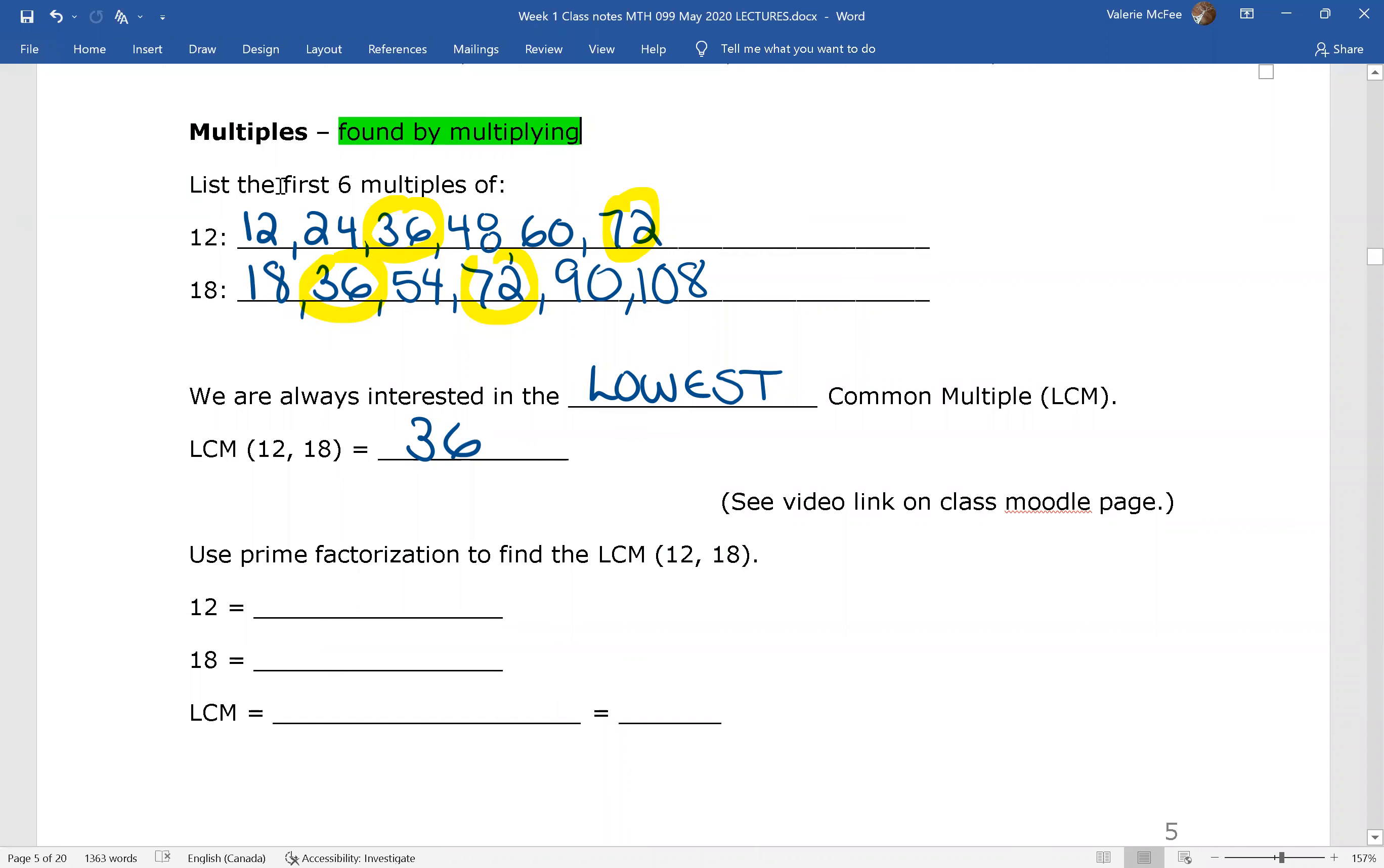How do we use prime factorization so that we don't have to make a list of multiples to find the lowest common multiple? Well, let's look at our example of 12 and 18. We know that 12 can be prime factored 2 squared times 3. 18 is 2 times 3 squared. Let's think about what it means to be a multiple. The multiples of 12 contain 12: 1 times 12 is 12, 2 times 12. That means my lowest common multiple needs all of 12.